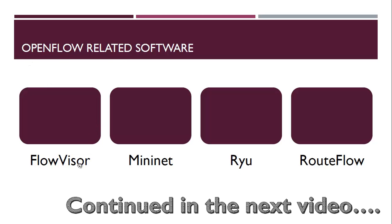The next category includes OpenFlow-related software tools: Flowvisor, Mininet, ReU, and RaulFlow are OpenFlow controllers, but Mininet is an emulation tool that lets you run SDN-related topologies and experiments. There is also NS3, but Mininet uses Linux lightweight virtualization and is really feasible. Flowvisor, ReU, and RaulFlow will be discussed in an upcoming video.